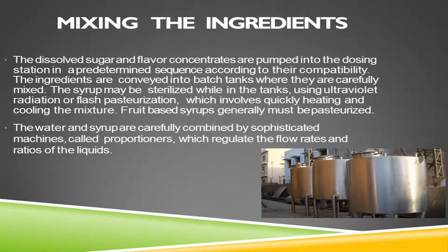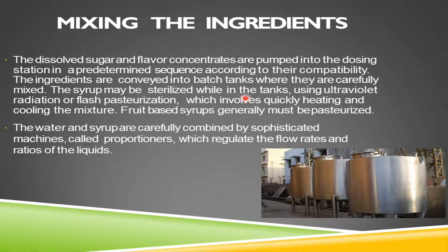The third step is mixing the ingredients. The dissolved sugar and flavor concentrates are pumped into the dosing station in a predetermined sequence according to their compatibility. The ingredients are conveyed into batch tanks where they are carefully mixed. The syrup may be sterilized while in the tanks using ultraviolet radiation or flash pasteurization.